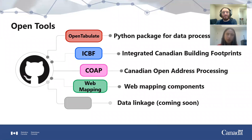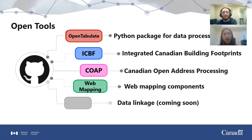As mentioned, we have several projects, scripts, and the web map code available on GitHub. OpenTabulate is one of the more widely used scripts for most of our databases. We also have COAP — the Canadian Open Address Processing script — specific to the Open Database of Addresses, developed in partnership with the Open Addresses community. There's also a script for the Integrated Canadian Building Footprints merging ODB, Microsoft, and OSM data. And we've created a generalized web mapping component repository so others can create similar interactive web maps.